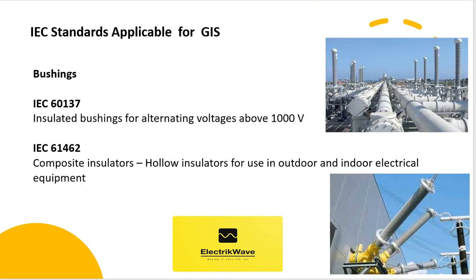Bushings: IEC 60137, Insulated Bushings for Alternating Voltages Above 1000 V. IEC 61462, Composite Insulators — Hollow Insulators for Use in Outdoor and Indoor Electrical Equipment.